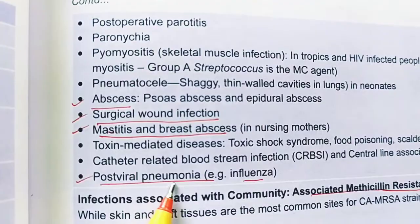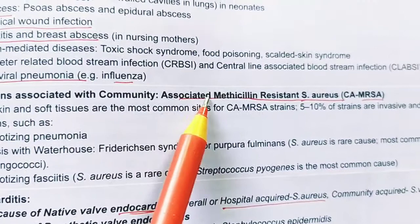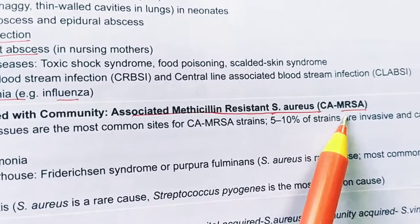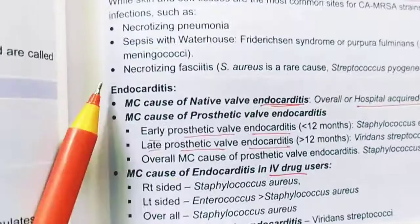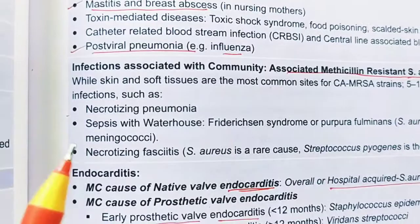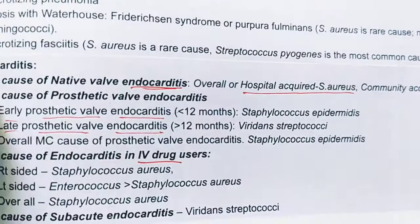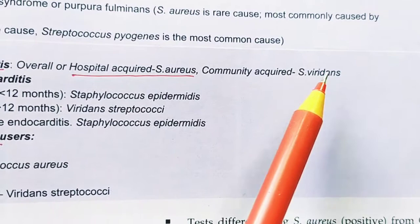Community-acquired MRSA (CA-MRSA) also causes skin and soft tissue infections. Regarding endocarditis: the main cause of native valve endocarditis in hospital-acquired settings is S. aureus. For community-acquired native valve endocarditis, the most common cause is S. viridans. Remember: community acquired → S. viridans; hospital acquired → S. aureus for native valve endocarditis.